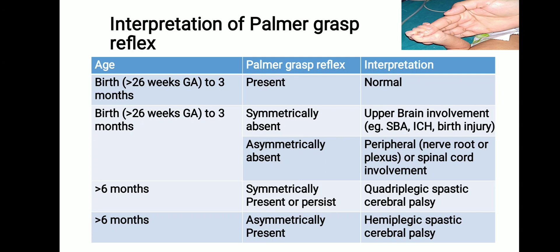If the palmer grasp reflex is symmetrically absent between birth and three months of age, it indicates an upper brain lesion, possibly due to severe birth asphyxia, intracranial hemorrhage, birth injury, or infection such as pyomeningitis. If it is asymmetrically absent, it may be due to peripheral or spinal cord involvement.